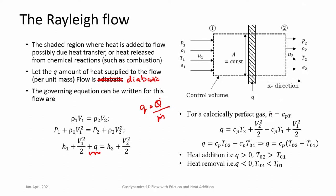For a calorically perfect gas, H = Cp·T. So Q is essentially h₀₂ − h₀₁, which is Cp(T₀₂ − T₀₁). This one should understand: if there is heat addition, then Q > 0, meaning stagnation temperature will rise — T₀₂ > T₀₁. If heat is removed from the system, then Q < 0, meaning stagnation temperature will drop.